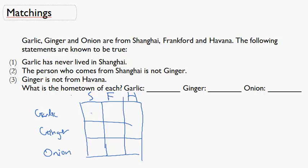Now let's go through these. An X means that that's not possible, and a check means that that is possible. So garlic has never lived in Shanghai — I'm going to put an X there. The person who comes from Shanghai is not ginger, so another X there. And finally, ginger is not from Havana, so another X.